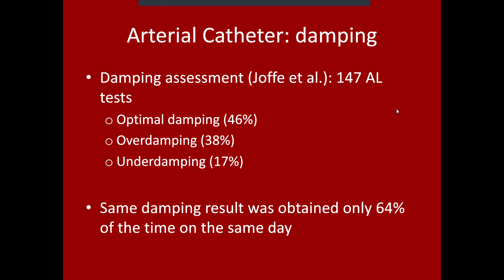Beyond that, the most interesting finding was that the same damping result was not necessarily obtained on the same arterial catheter on the same day — only about 64% of the time did they get the same result when repeating the fast flush test. This shows there's some lability in the appropriate damping of these arterial catheters.